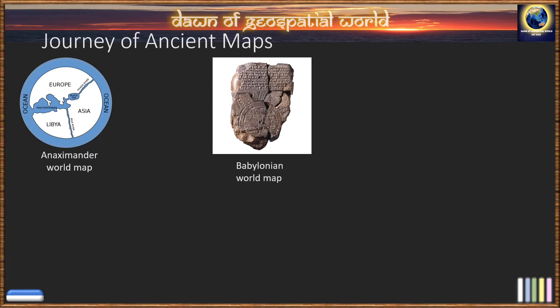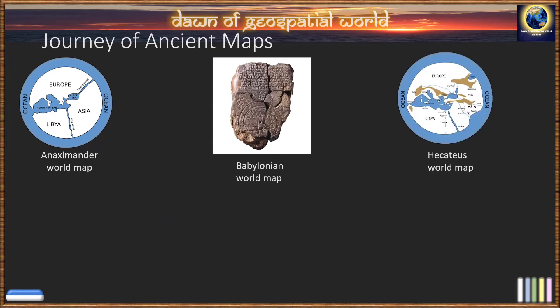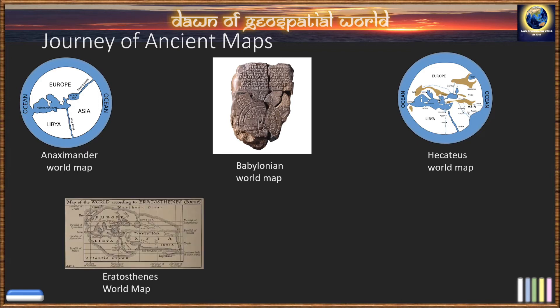The Babylonian world map was made as a mythological world map, also created on a clay tablet. Then Hecataeus' world map described the continents, countries, and inhabitants of the known world. Then came Eratosthenes' famous world map — he drew an improved world map and was the first geographer to incorporate parallels and meridians in the map.